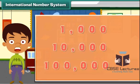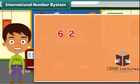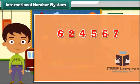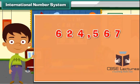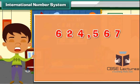Now consider the number 624567. It will be written as six hundred twenty-four comma five six seven in the international number system and read as six hundred twenty-four thousand five hundred sixty-seven.